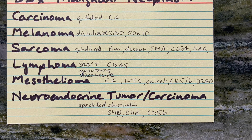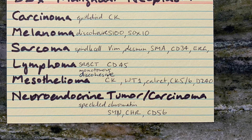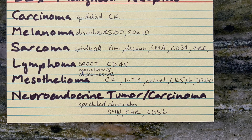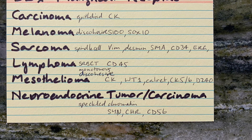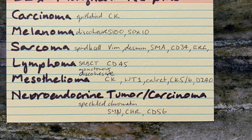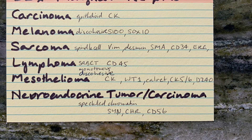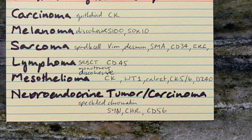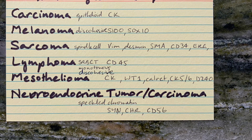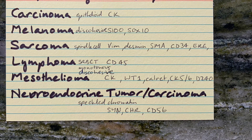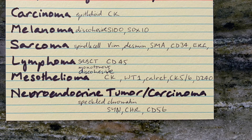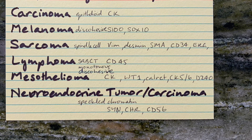Neuroendocrine tumours and carcinomas have an epithelioid shape and their nuclei have speckled chromatin. They stain positive with synaptophysin, chromogranin, and CD56.